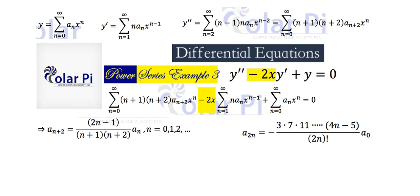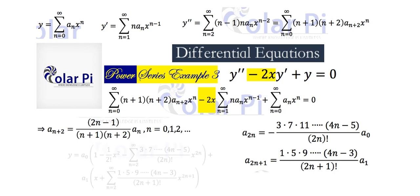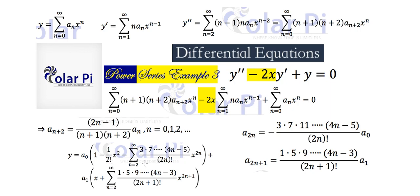That's what happens with the even coefficients of our solution y. And this is what happens with the odd coefficients — all of the odd coefficients are related to a sub 1 in this way. So we can write our solution y by grouping together all the even x-powered terms, factoring out a sub 0, and all the odd x-powered terms, factoring out a sub 1. The remaining terms in each group are written more succinctly using sigma.